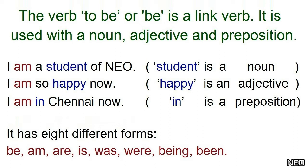It has 8 different forms: be, am, are, is, was, were, being, and been. Now let's discuss them tense-wise.